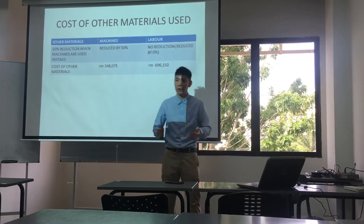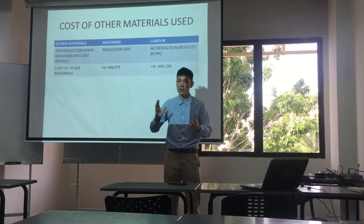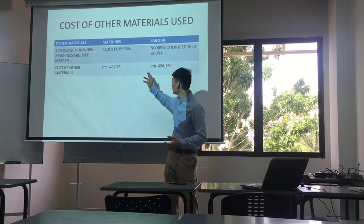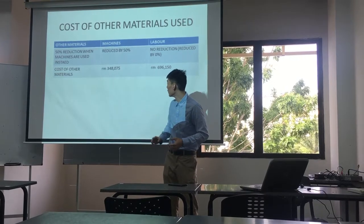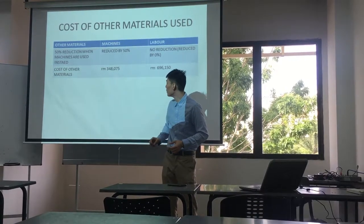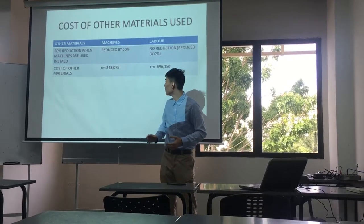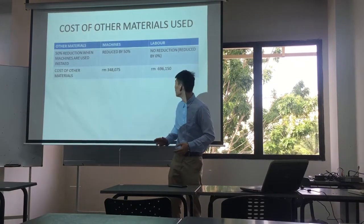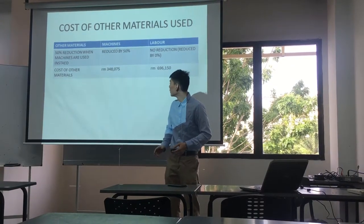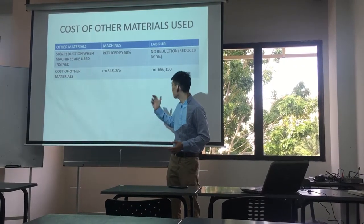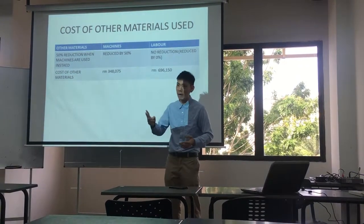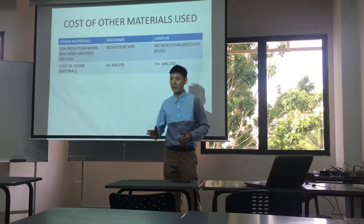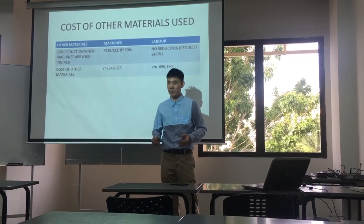For the cost of other materials used, when machines are used, you are able to see that we are able to reduce the cost of other materials by 3% as compared to labour. The amount of other materials cost is 2% of the corresponding cost when machines are used.